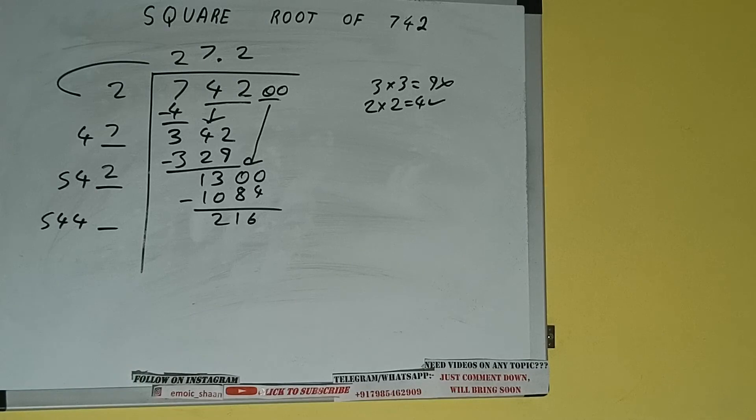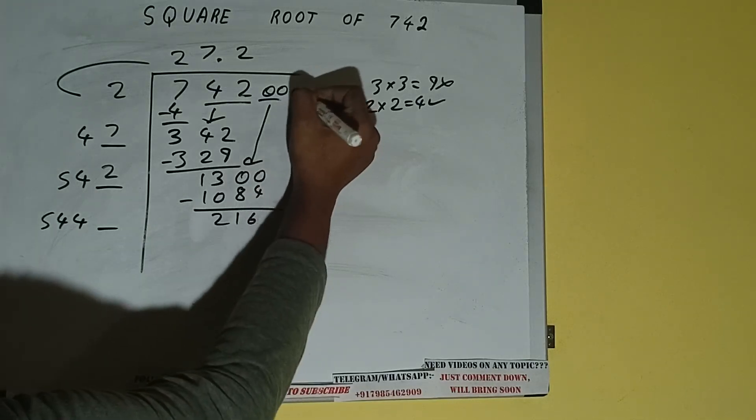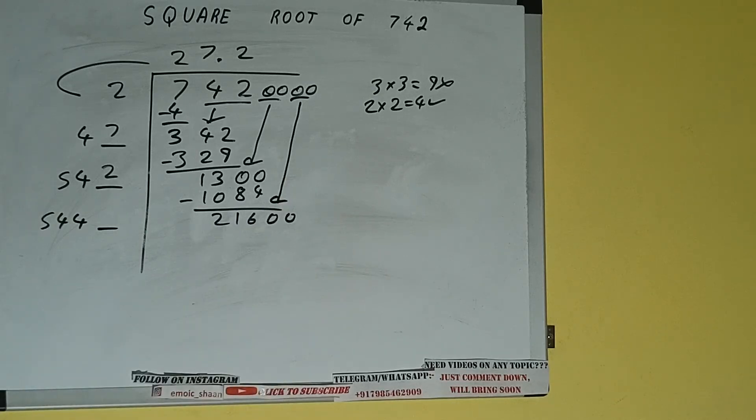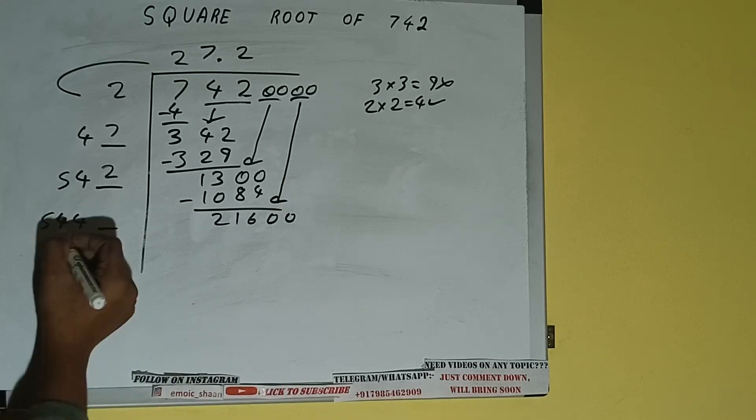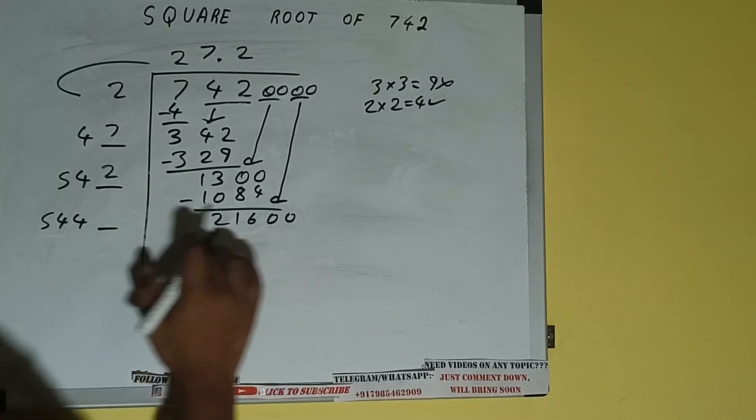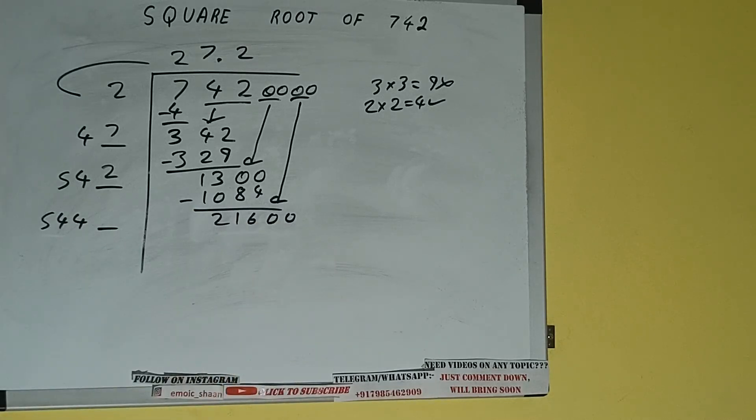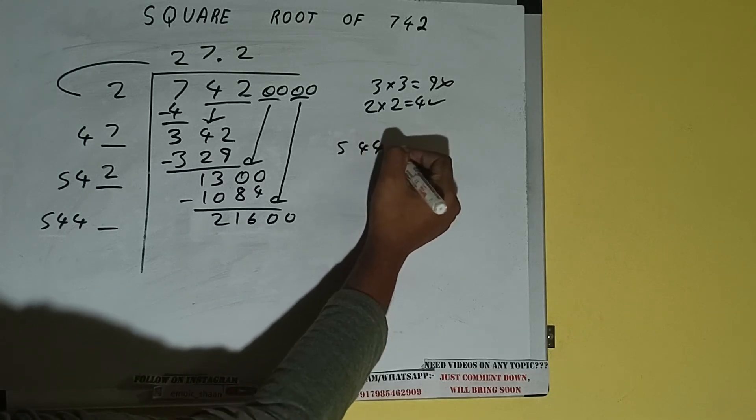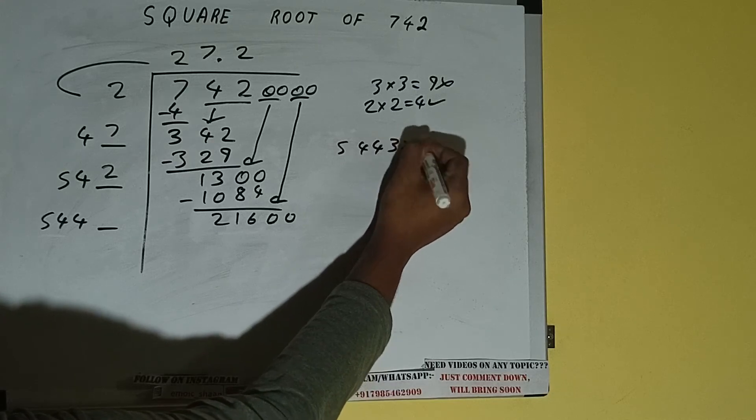And this number we need to make it big, so bring the next pair of zeros down and it will be 21600. Compare this 54 and 216, so 54 4 times is 216. So if we try 4 here we'll get a number greater than 21600, so we cannot try 4 times. We have to try 3 times. So 5443 into 3 we can try.